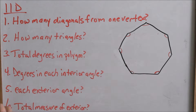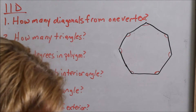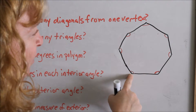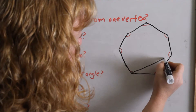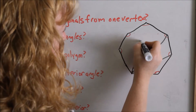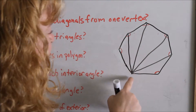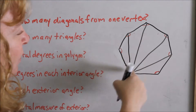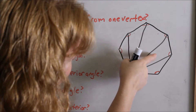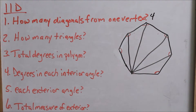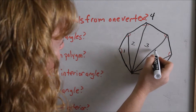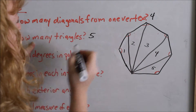So if I can figure out the total number of degrees inside this seven-sided polygon, I can divide by seven to figure out each angle. The first question asks: how many diagonals can you draw from one vertex? Pick one vertex and draw diagonals to each non-adjacent vertex — I drew four diagonals. Then, how many triangles did I draw? One, two, three, four, five — I drew five triangles.